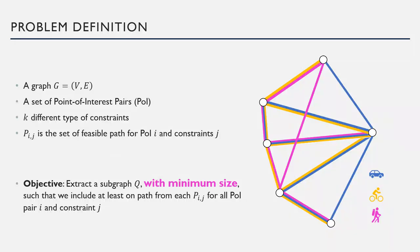The problem we consider in this paper is as follows. We are given a graph with vertices and edges and a set of points of interest, which is a subset of vertices. We are also given K different types of constraints.